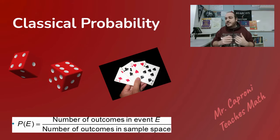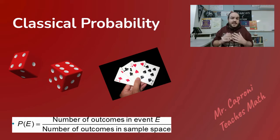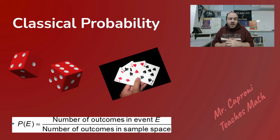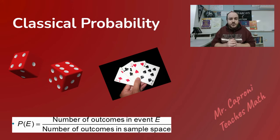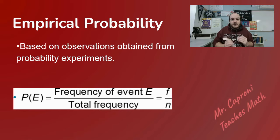Another example: the probability of drawing a heart from a deck of cards. There are 13 hearts out of 52 cards, so the probability would be 13 over 52.